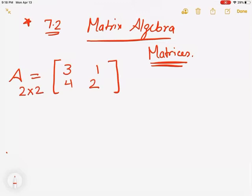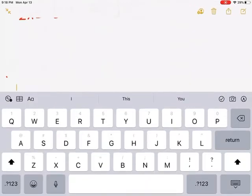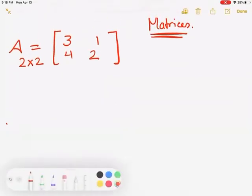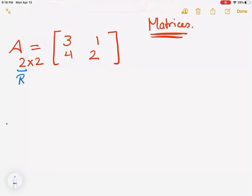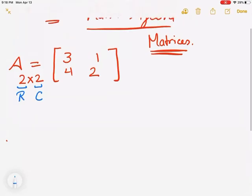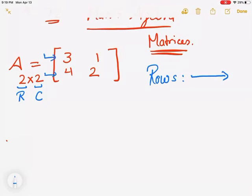This is something you need to understand. When I say size 2 by 2, the first number represents the number of rows in this arrangement, and the second number represents the number of columns. When I say rows, I'm looking at the horizontal arrangement — so horizontally I see two different rows here. And when it comes to columns, I'm looking at the vertical arrangement, which is also 2, so the size would be 2 by 2.